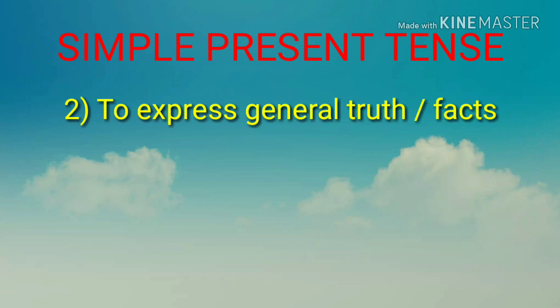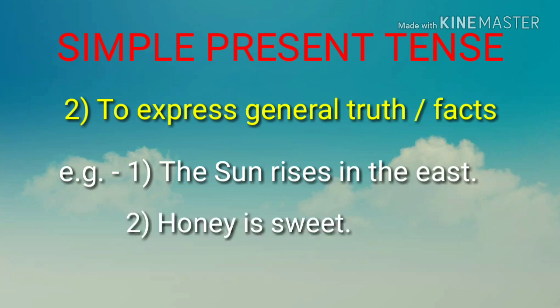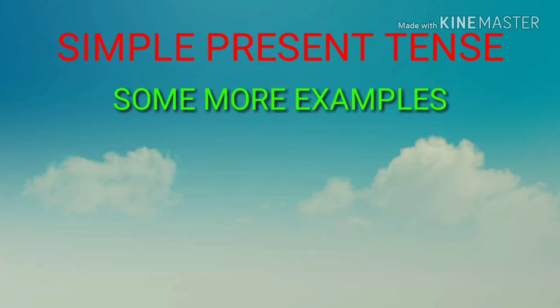The simple present tense is used to express general truth or facts. सामान्यतः सत्यता या वास्तविकता को दर्शाने के लिए simple present tense का उपयोग होता है। जैसे: 'The sun rises in the east' — सूरज पूरब में उगता है — यह एक truth है, fact है। And another example: 'Honey is sweet' — शहद मीठी होती है — यह भी fact है, एक truth है। इसलिए simple present tense का प्रयोग किया गया है।